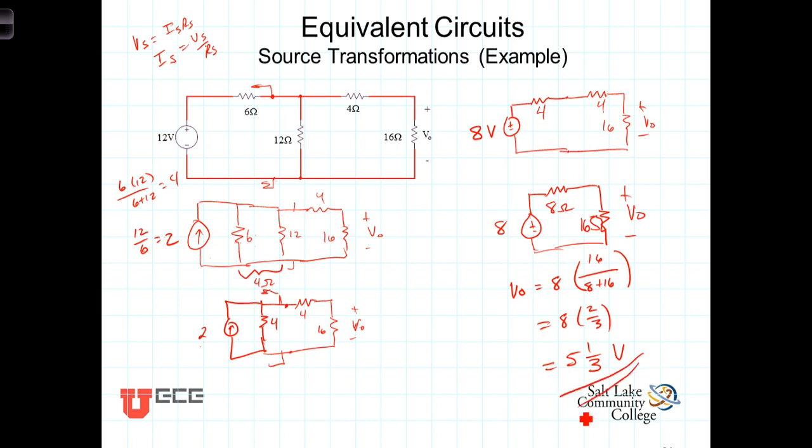And the claim through this source transformation process is that this voltage here that we calculate through the voltage divider, the voltage across this 16-ohm resistor, is the same in each of these circuits. But in the process of doing these equivalent circuits and source transformations, we've been able to reduce a more complicated circuit down to a less complicated circuit that allowed for a relatively simple voltage divider calculation to give us the output voltage V-out.